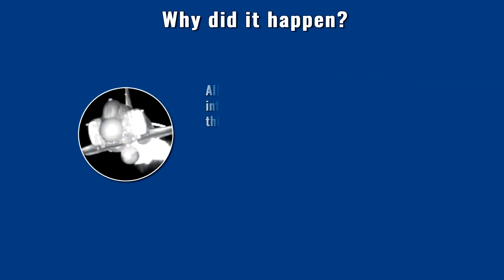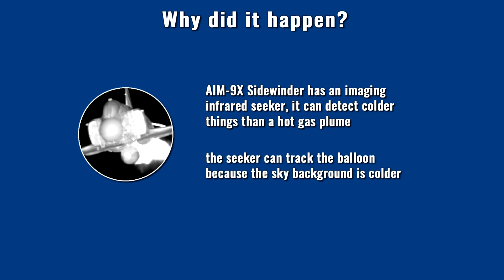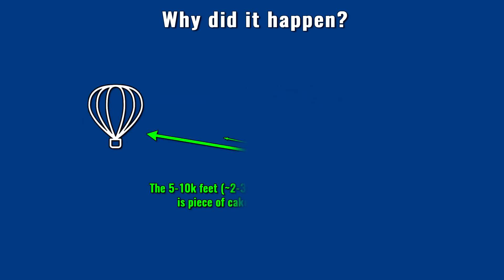The AIM-9X missile has an imaging infrared sensor — essentially an infrared camera. It can see the balloon perfectly against the sky background, and lock-on after launch is possible with the Block 2 version. Thanks to the balloon's very large surface area and the programmable seeker of the AIM-9X, it could be ensured the missile aimed at the balloon and avoided the payload. With the older AIM-9M version, the balloon would have been an impossible target, as its infrared sensor could only detect the hot gas plume of a jet engine — the balloon would have been too cold.